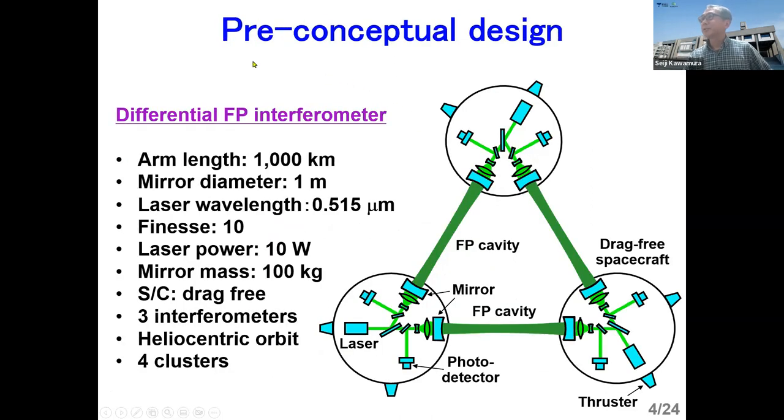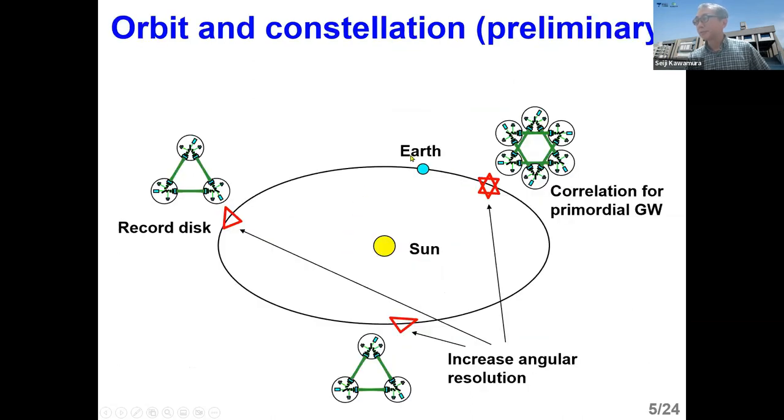So this is a pre-conceptual design of DECIGO. DECIGO uses differential Fabry-Perot Interferometer. The arm length is 1,000 kilometers, and the mirror diameter is 1 meter. Laser wavelength is 0.515 micron, and the finesse is 10. And laser power is 10 watt, and mirror mass, 100 kilogram. And we have three drag-free spacecraft, and containing three interferometers. And it will be put in heliocentric orbit. Four clusters will be put in heliocentric orbit.